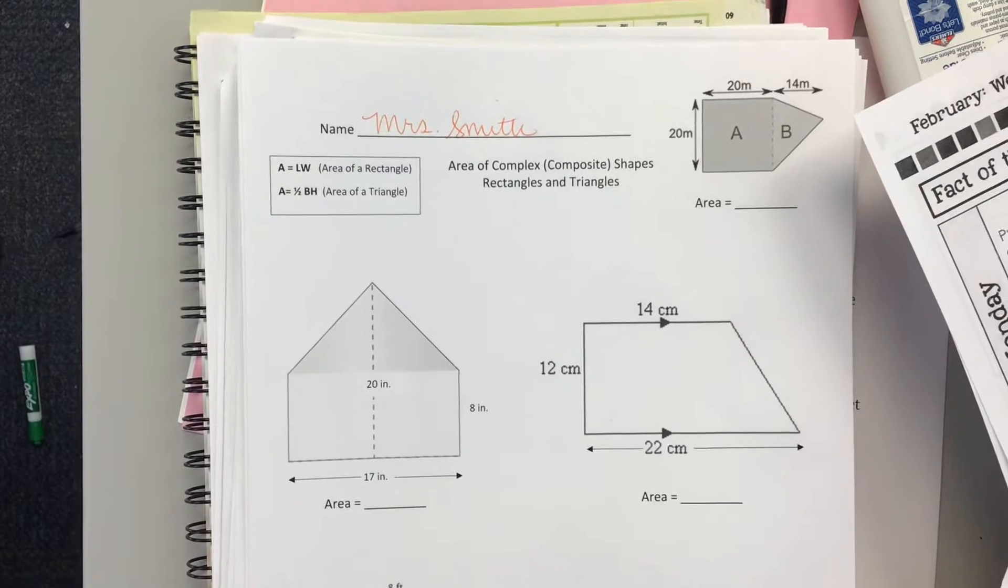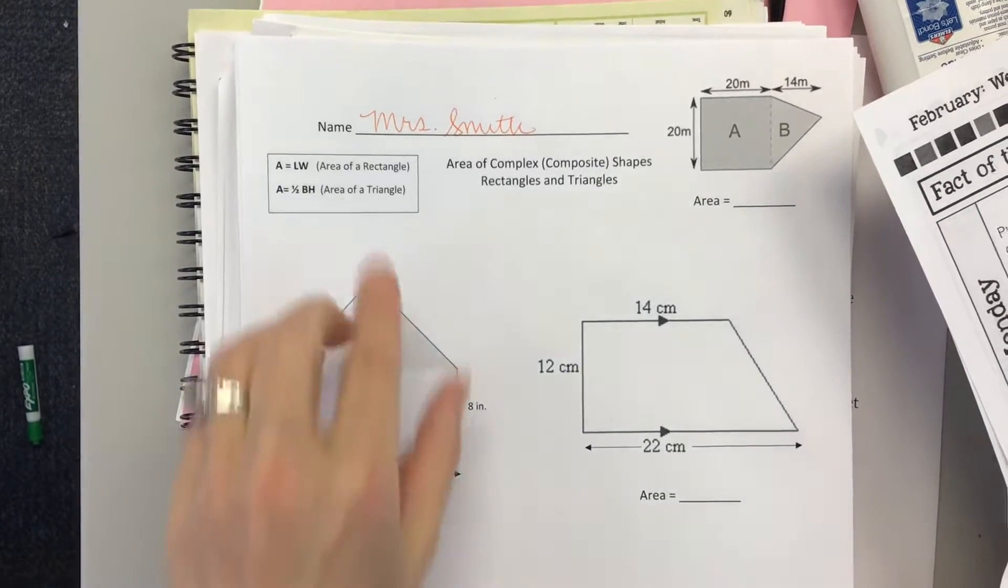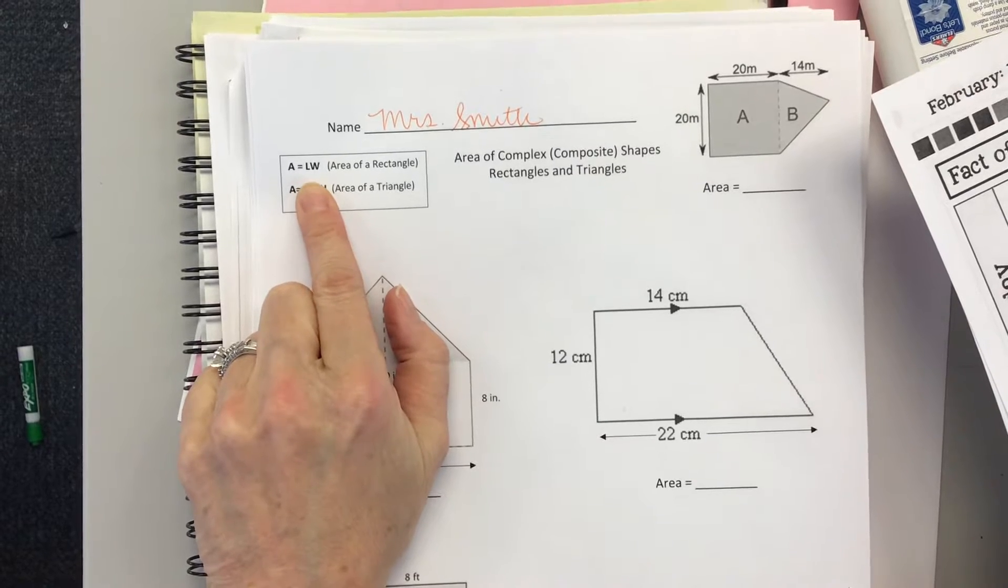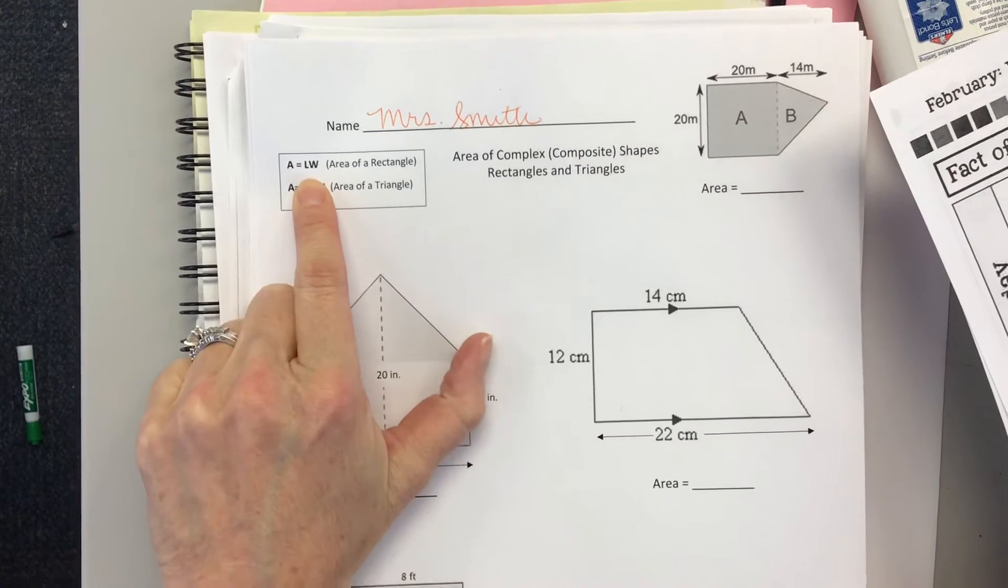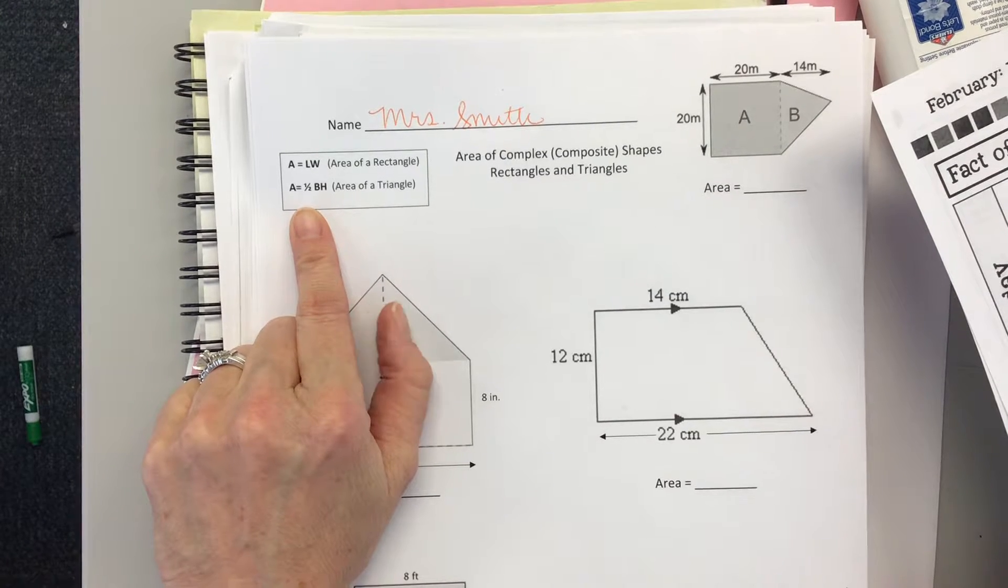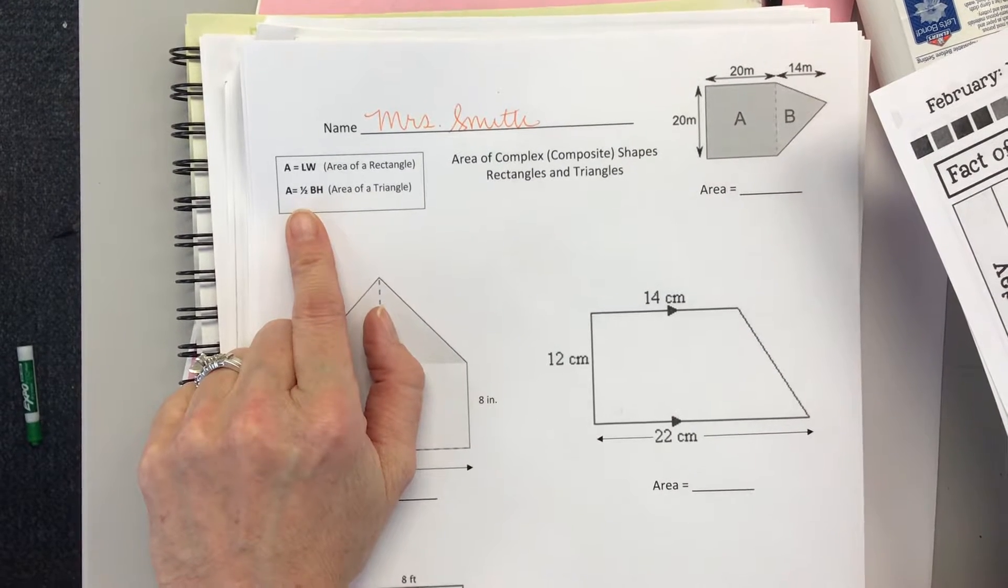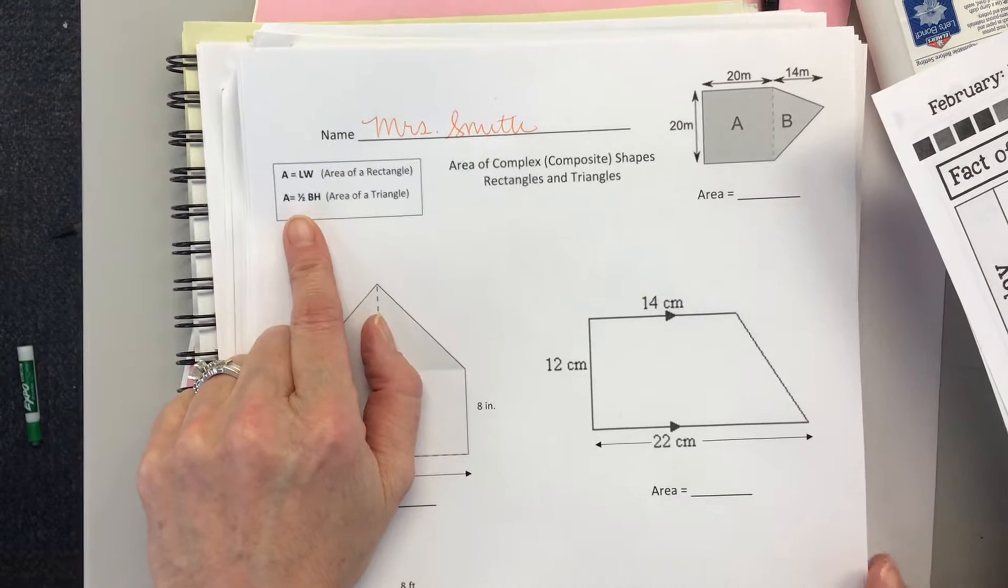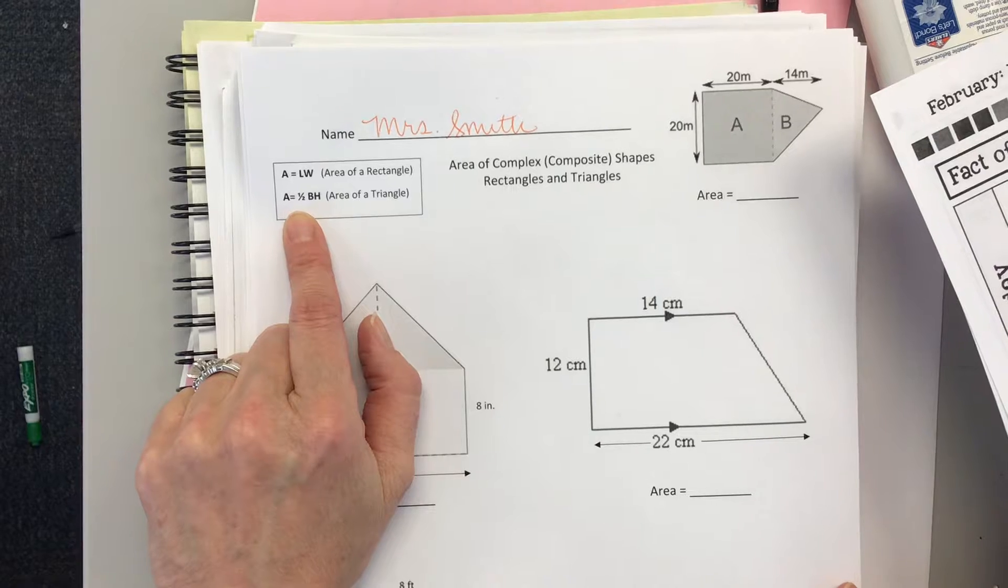Yes ma'am. I have another word. What? Abnormal. Abnormal is a synonym for irregular. Okay, here we have area equals length times width. That's how you find the area of a rectangle. And then here we have the formula for the area of a triangle, which is area equals one half the base times the height.